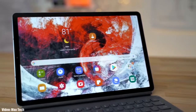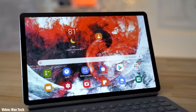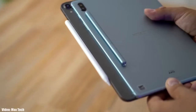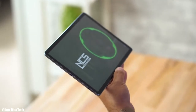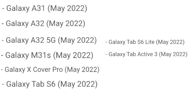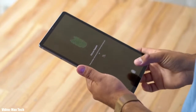Samsung has released the official Android 12 update based on One UI 4.1 for the Galaxy Tab S6 series, which includes the Galaxy Tab S6 and the Tab S6 Lite. This update was initially scheduled to be released in May according to the roadmap, but it's good to see that Samsung is releasing the update before the scheduled month.